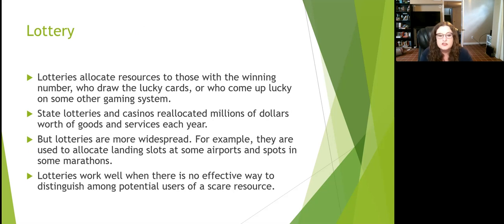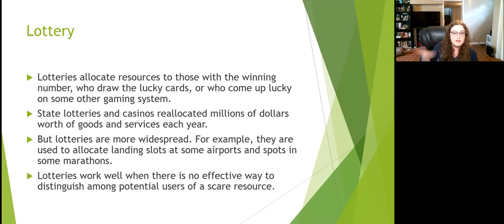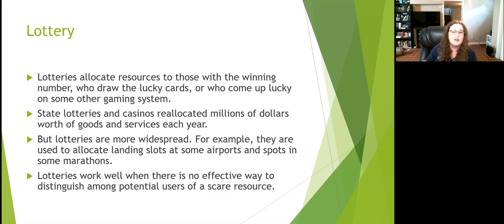Then there are lottery systems, which allocate resources to those with the winning number. These are used when there's no effective way to distinguish between potential users. If 500 people want a million dollars, it's hard to know who needs it most or what marginal benefit they'd get from it — so you just draw a number from a hat. Lotteries are used at some airports and for marathons like the Boston Marathon, which uses a lottery to determine who can enter.